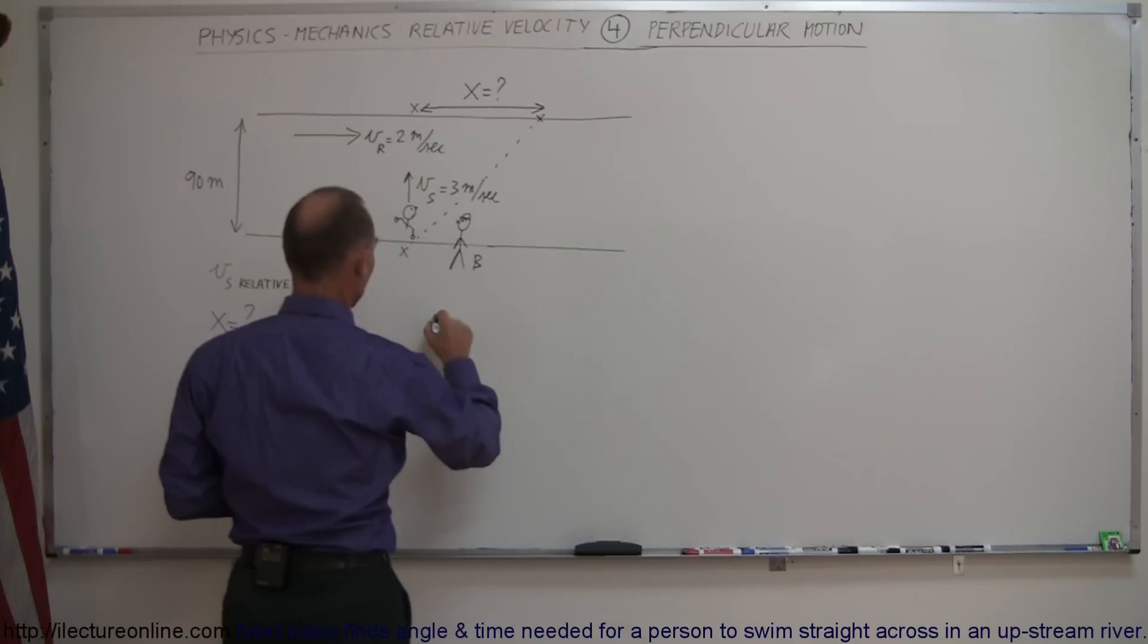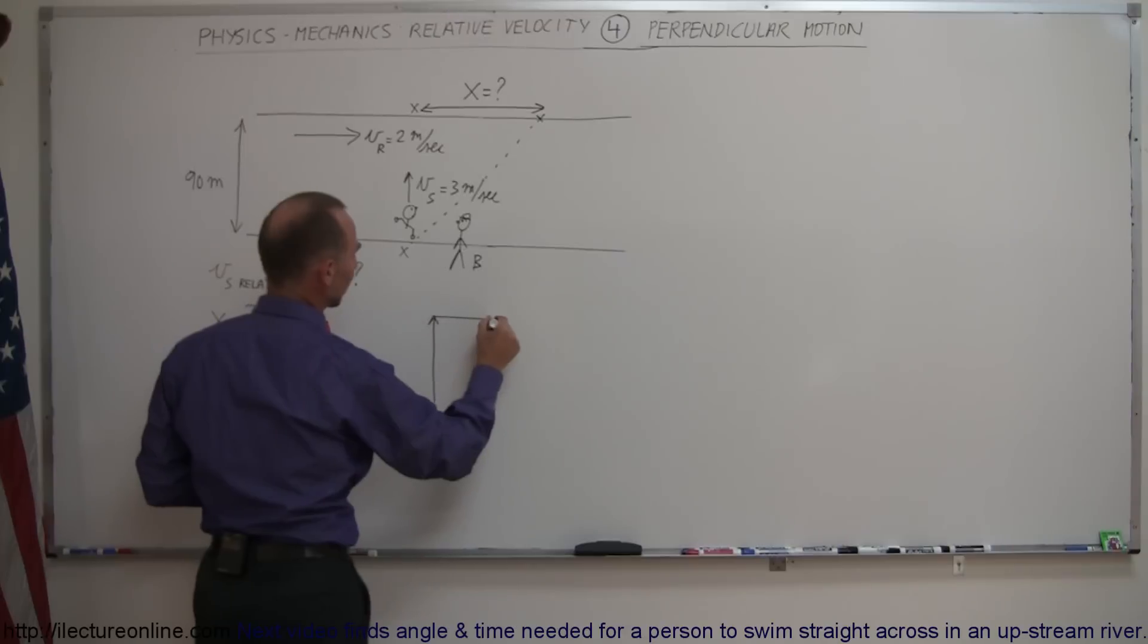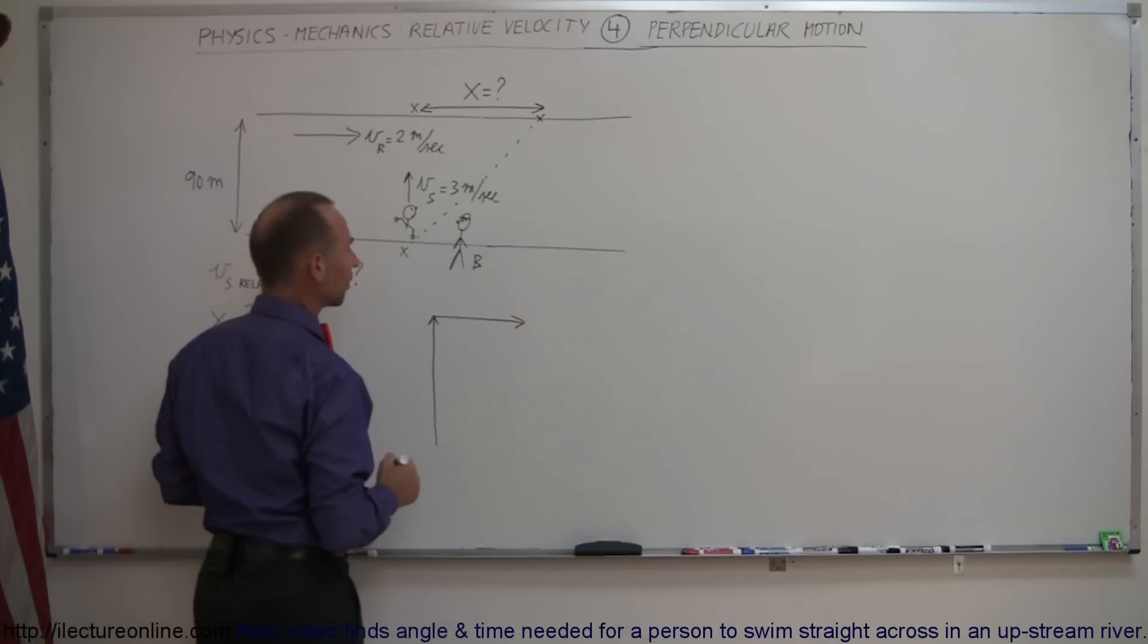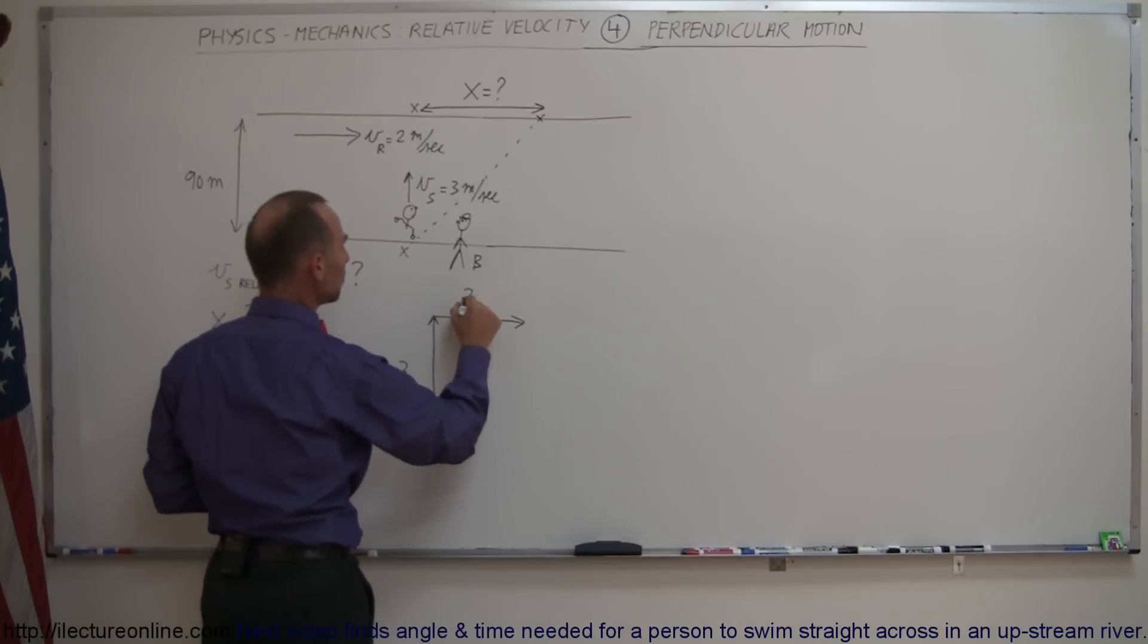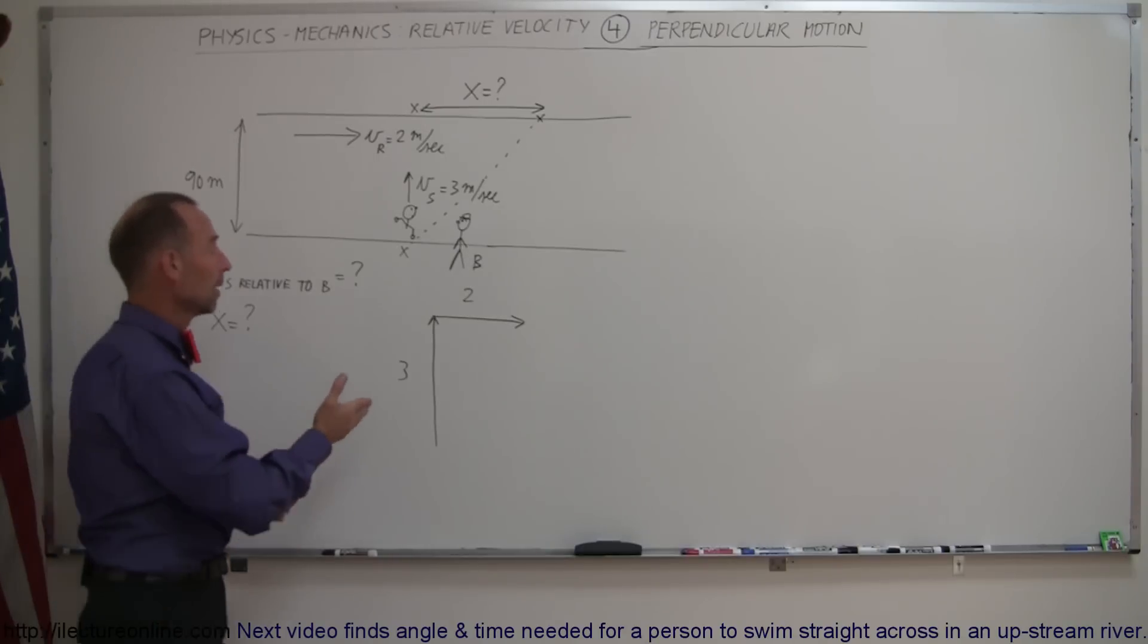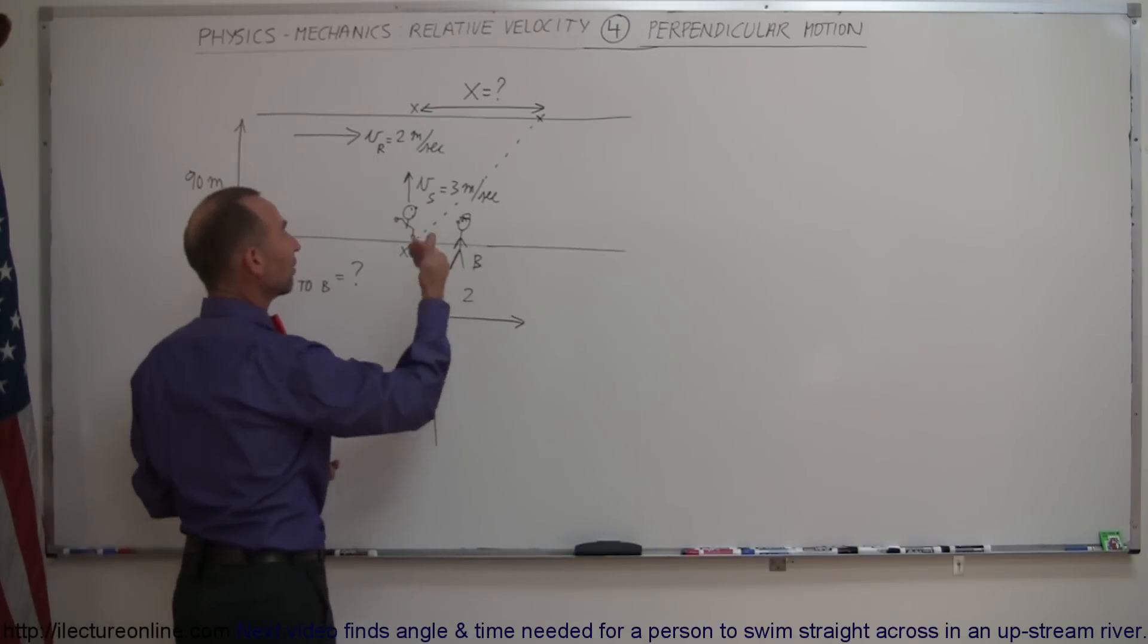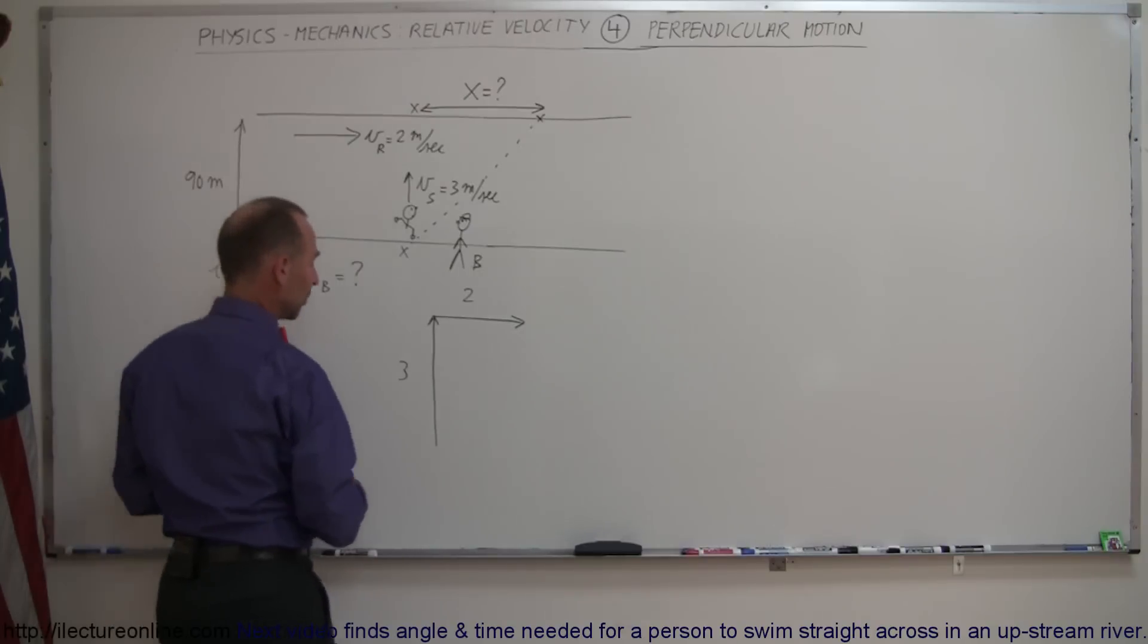Which means I'm going to end up with a vector that looks like this representing the velocity of the swimmer and a vector like this which represents the velocity of the river. So this length will be 3 meters per second, this length will be 2 meters per second, and then the vector sum of that will be the actual velocity of the swimmer relative to the side of the river or relative to the observer on the side of the river.